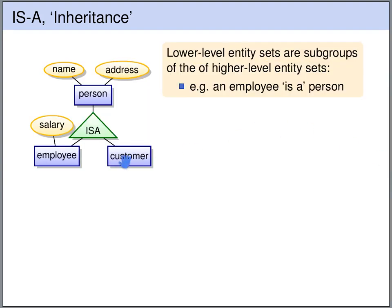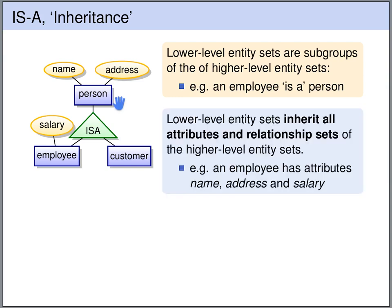The lower level entities are subgroups of the higher level entities. For example, an employee is a subgroup of person. The lower level entities do not only inherit the attributes, but they also inherit all the relationship sets of the higher level entities.